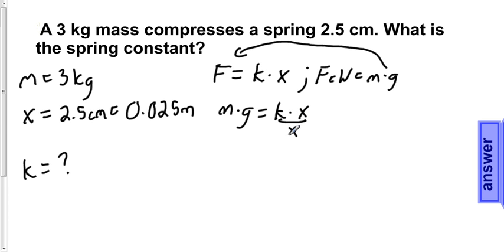We can algebraically rearrange the equation to get k onto one side. This makes k is equal to mg over x.